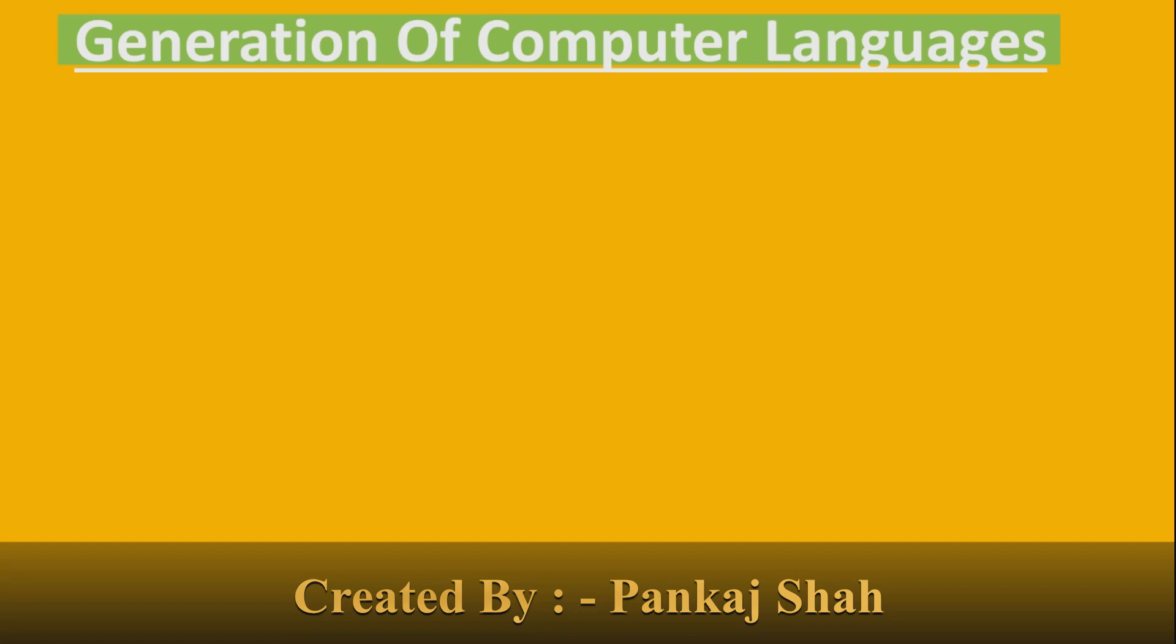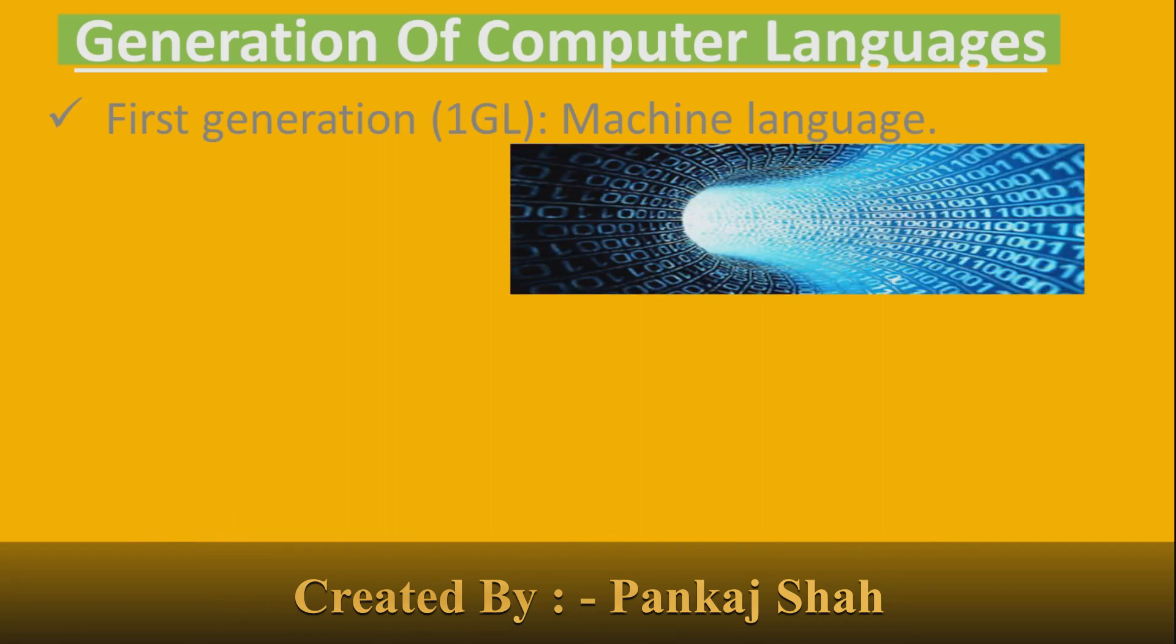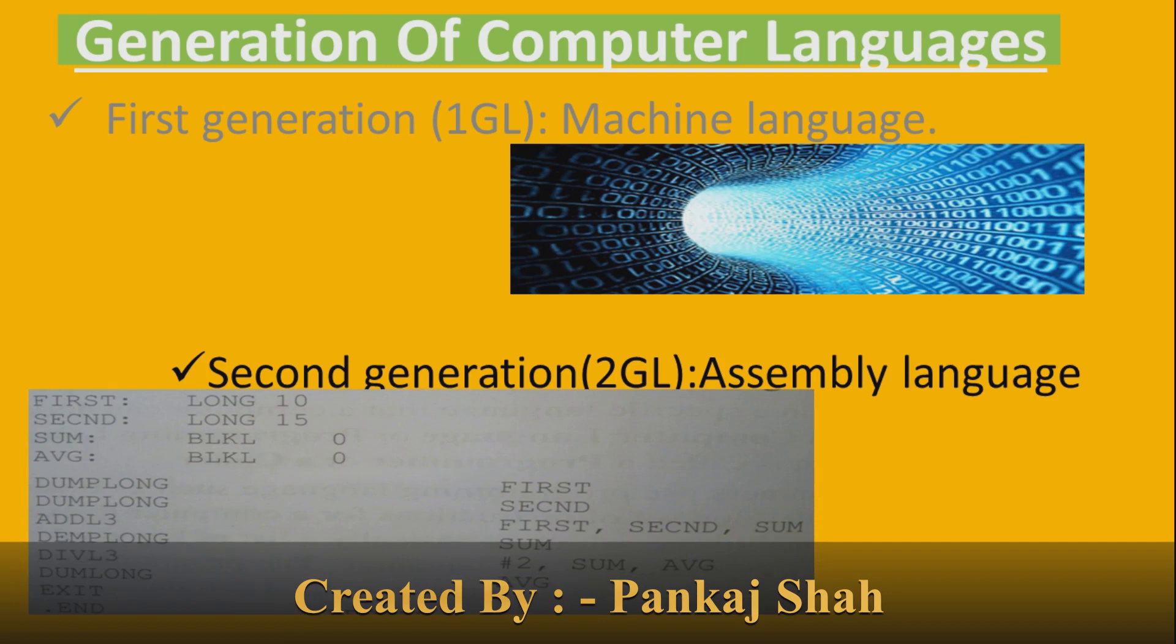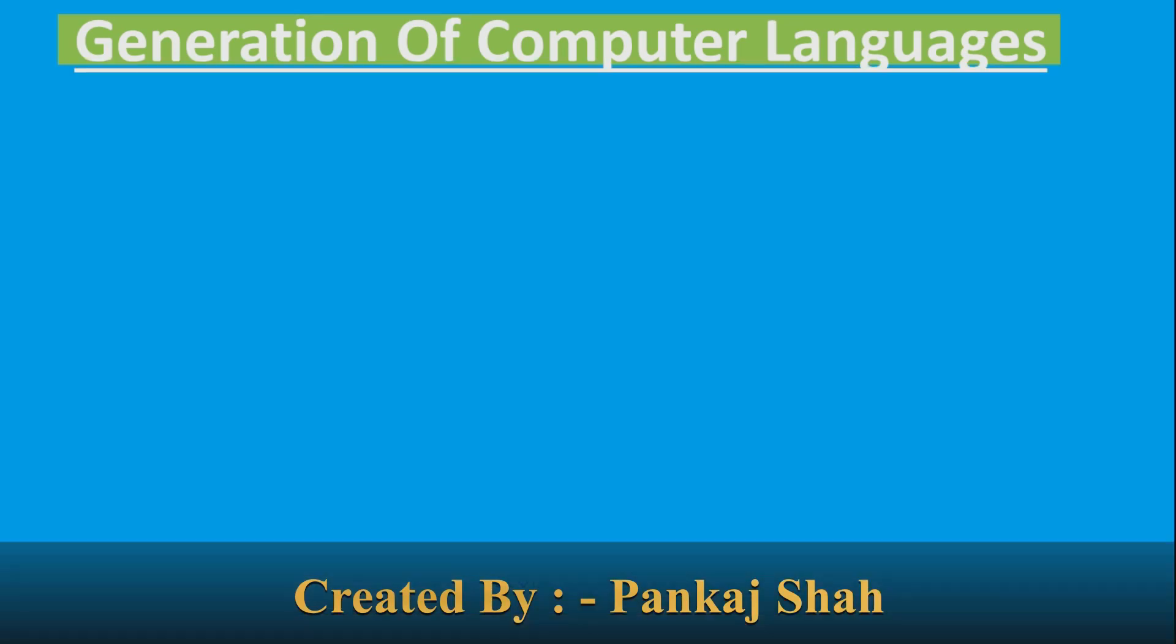Generation of Computer Languages. First generation language: Machine language, used in the 1940s using binary code, 0s and 1s. Second generation language: Assembly language, used in mid-1950s using mnemonic code. Third generation language: High level language, used in 1960s and 1970s.